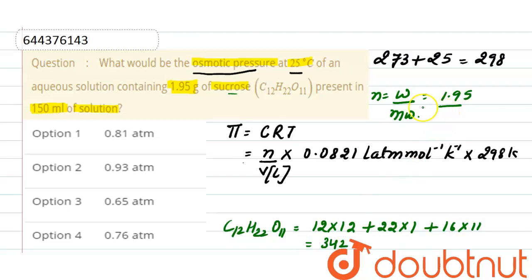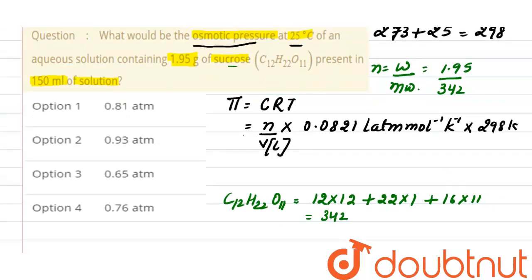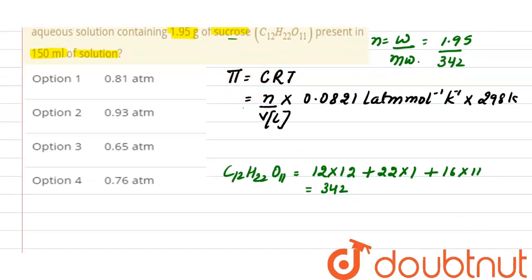342. Number of moles of sucrose are 1.95 divided by 342. Putting the values in the osmotic pressure formula, number of moles are 1.95 and 342. Volume required is in liters and here volume is in milliliters, so 150, to convert milliliter into liter, divided by 1000, into 0.0821, and here temperature is 298. After solving